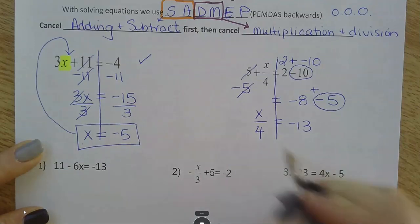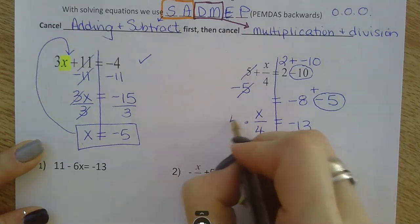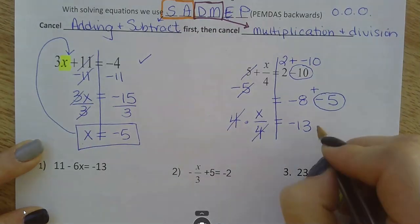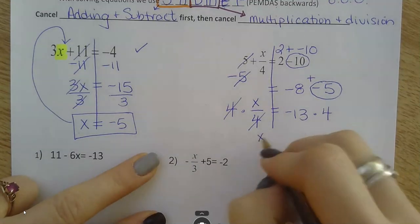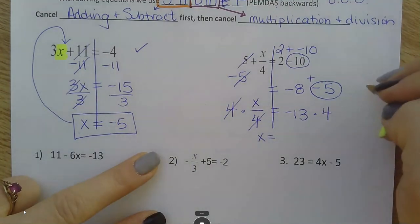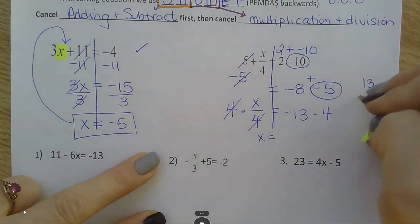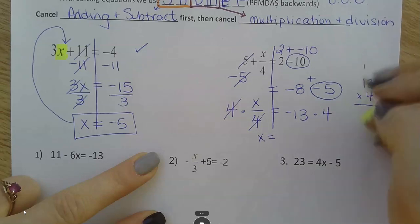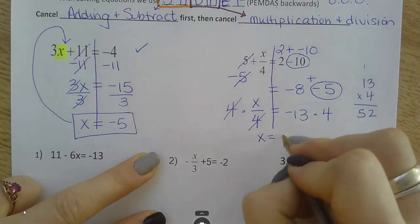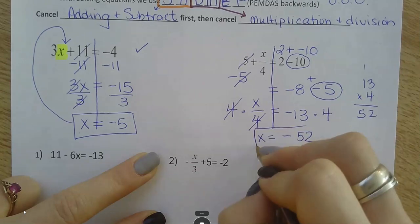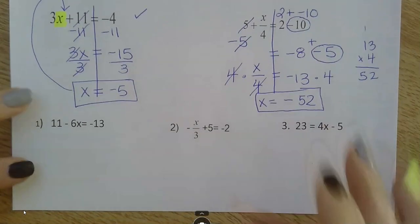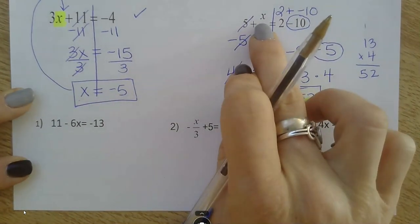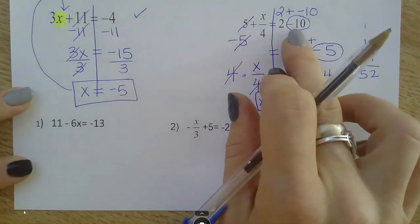And, to get x by itself, I have to multiply by 4 to cancel out dividing by 4. So, times 4. And, x is equal to negative 52. And, if I don't know, 13 times 4, come over here and do it. 12, 1, 4, 5. Negative 52. Okay? Always double check by taking that answer and plugging it back in here and making sure you get what you're supposed to.